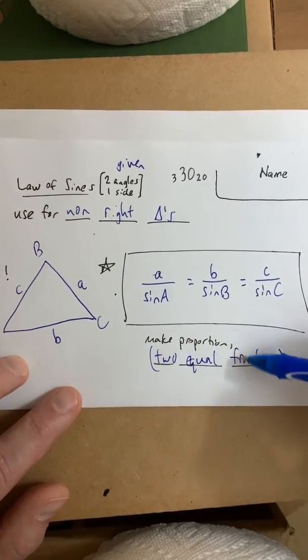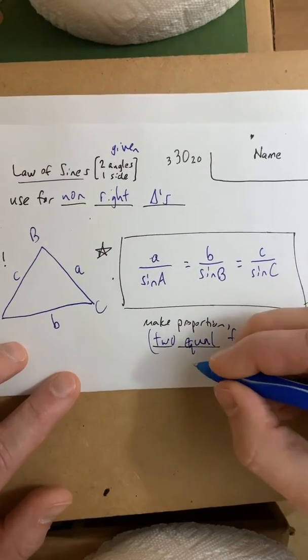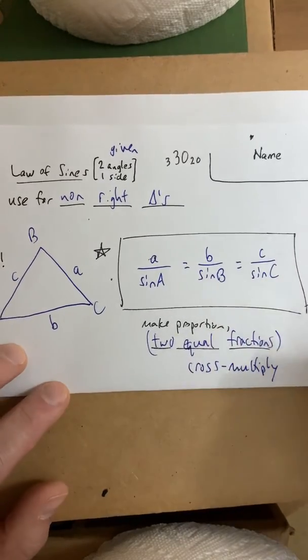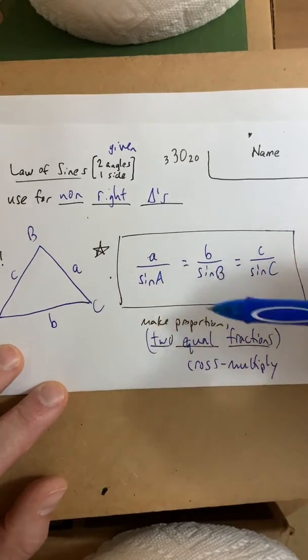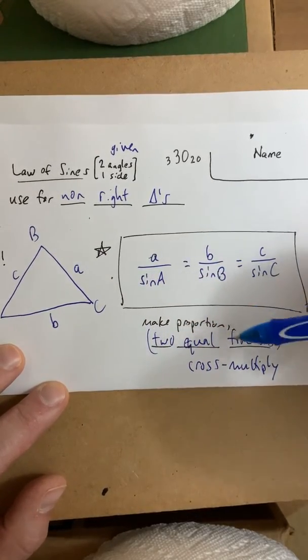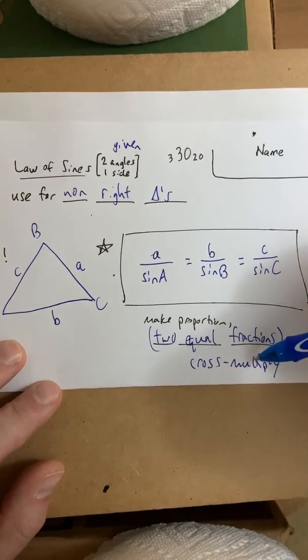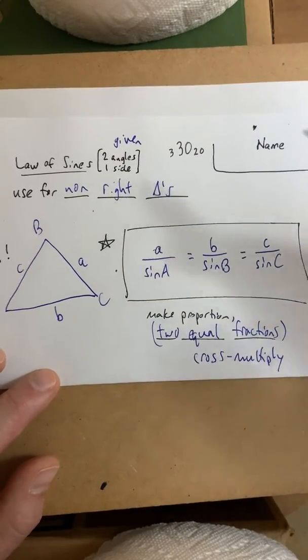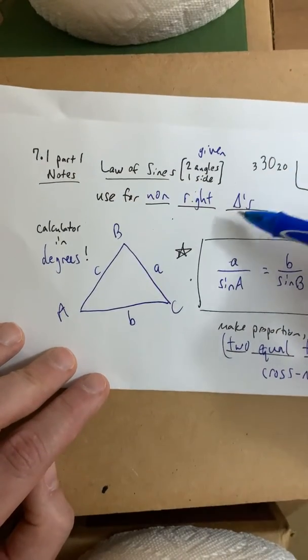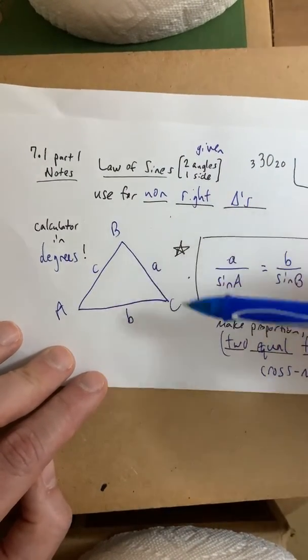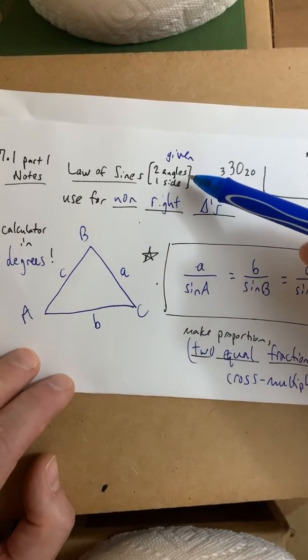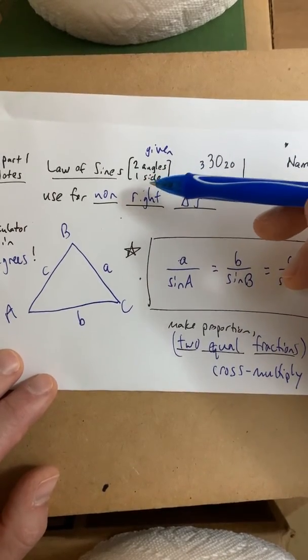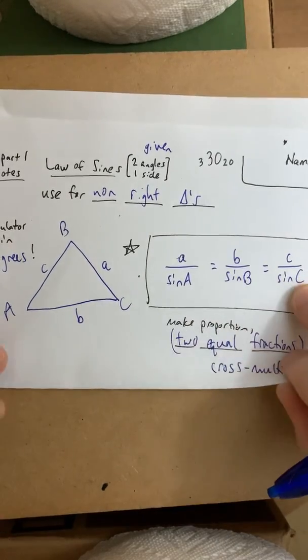And then the way you solve a proportion, most of y'all remember, is to cross multiply. So, after you plug in the numbers into the two fractions, you go ahead and cross multiply to solve for what you're solving for. In this case, in part one, in this lesson, we will be solving for two missing sides. The third angle is very easy to find. And we'll use the law of sines formula to solve for the other two sides. All right, so here we go. Let's see how we use this.